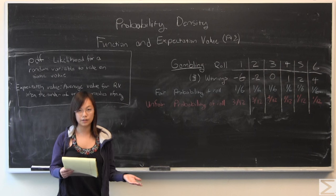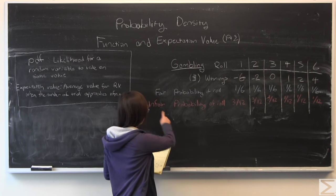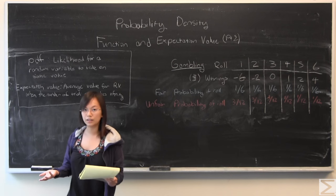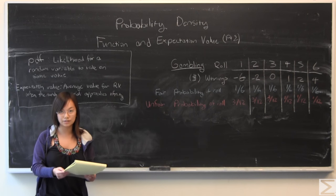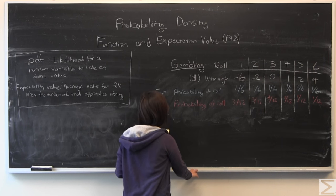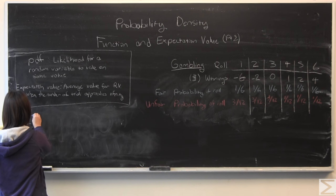We're going to find the expectation value using both a fair dice and a weighted dice. For the fair dice roll, you would expect that each number comes with the same probability. Based on what we learned last time for the expectation value, we can calculate how much money we think we'll win or lose.